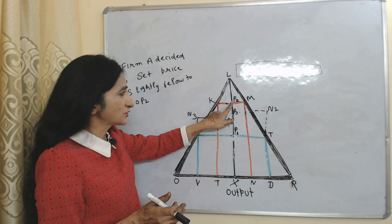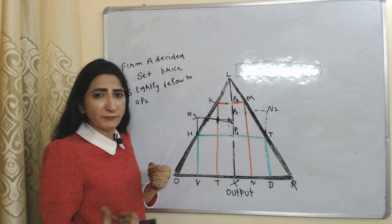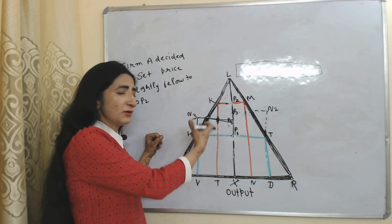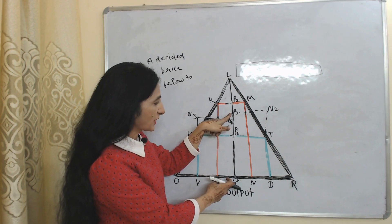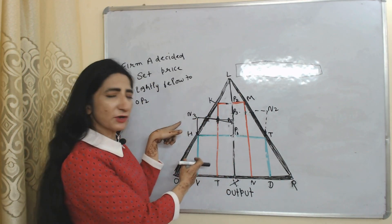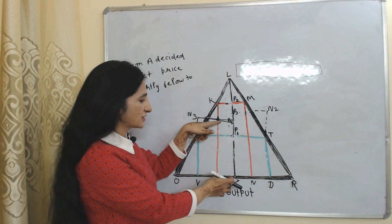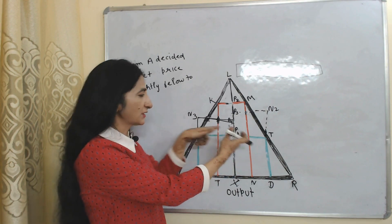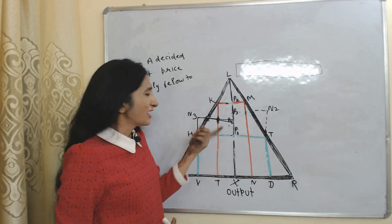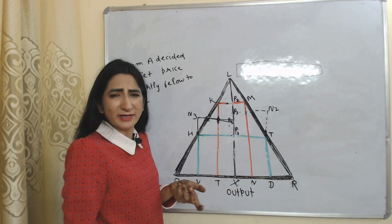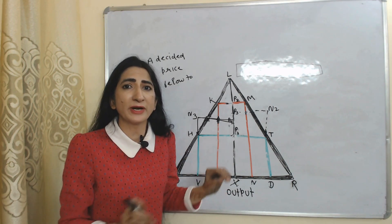Now firm A is charging p2 price, which is the profit maximization price, so firm A is earning maximum profit. Seeing this, firm B will also react and decides to set its product price slightly below xp2. Now price of B is xp3 — profit of B increases but it gives loss to A. Now A reacts, setting price at xp4, giving profit to A but loss to B. B reacts again, and this price war continues until they reach p1. Again, p1 is not a stable equilibrium point — any firm will react and the process continues. There is no stable equilibrium point in the Edgeworth model.